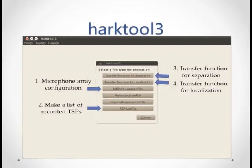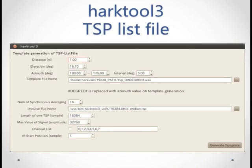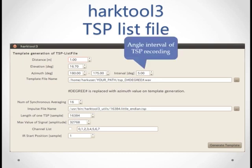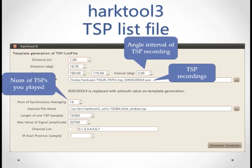Next, let's click the TSP List file button. Now we'll tell the software about the TSP recordings you made. Here, set the angle interval you used during your TSP recording. In this example, we place the speaker every 5 degrees around the microphone array. Next, set the path to the TSP recordings you recorded earlier. Finally, set the number of TSP chirps that were played during each recording. This is typically 8 or 16 and used for the TSP averaging calculation. When you're done, click the Generate Template to save the file.